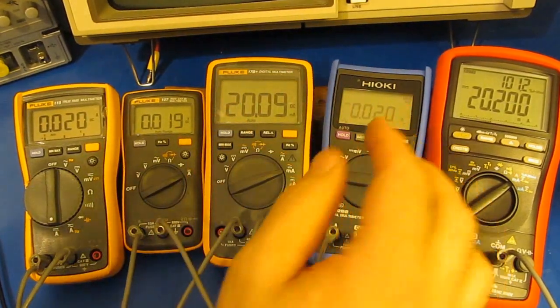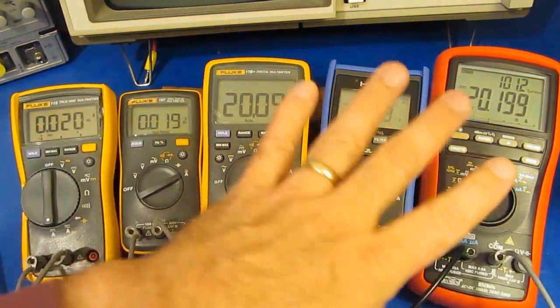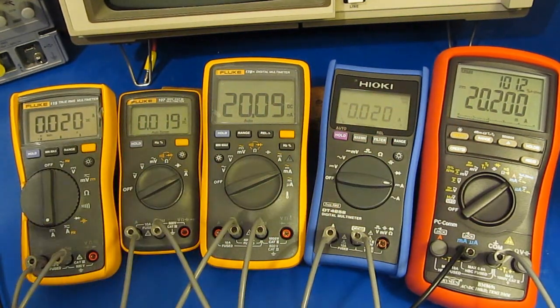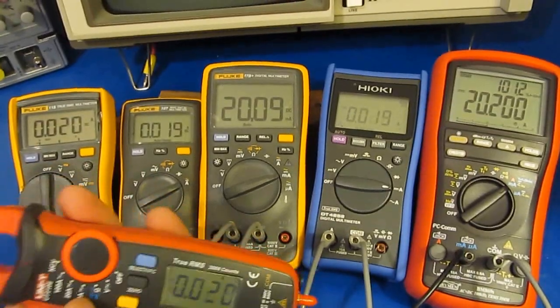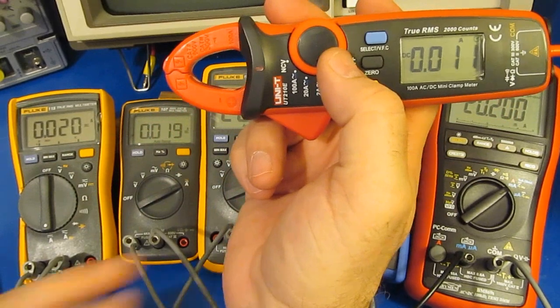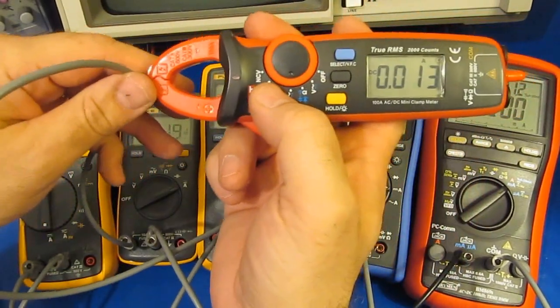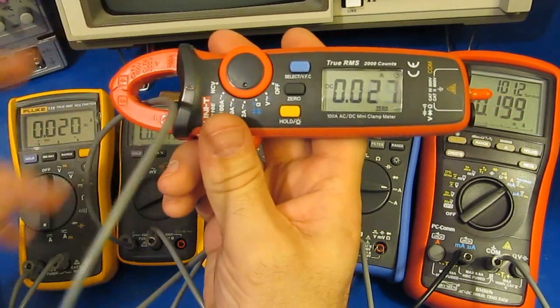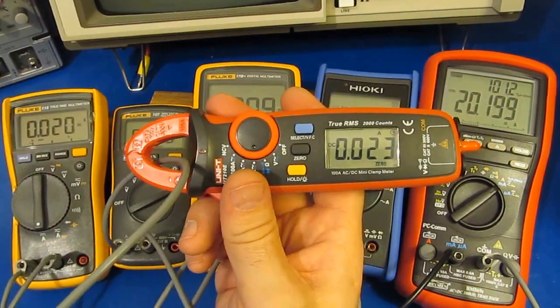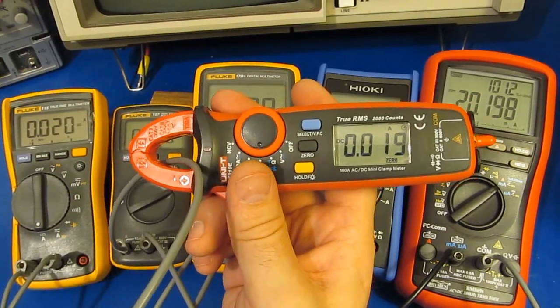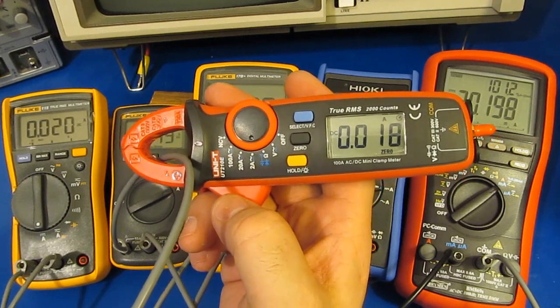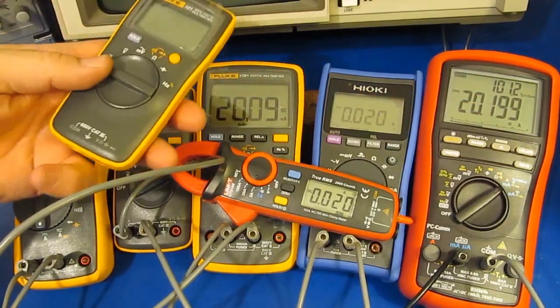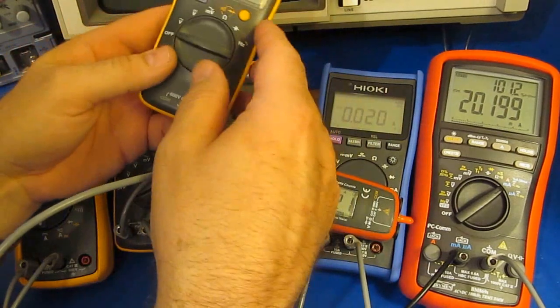Currently I have all five of these meters tied in series and currently I'm driving this with roughly 20 milliamps. If we want to take the measurement using the UT210, we would just zero out the current. You can see we're reading roughly 19 milliamps.